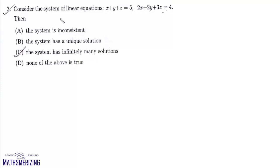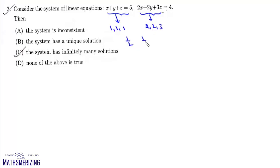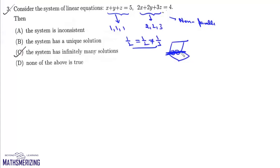Question 3: consider the system of linear equations X plus Y plus Z equals 5, and 2X plus 2Y plus 3Z equals 4. These two equations represent two planes in 3D space. For the first plane, direction ratios of the normal are 1, 1, 1, and for the second plane they are 2, 2, 3. Their ratios are 1 by 2, 1 by 2, and 1 by 3, which are not equal, so the two planes are non-parallel. Non-parallel planes intersect in a line, giving infinitely many solutions, and that's option C.